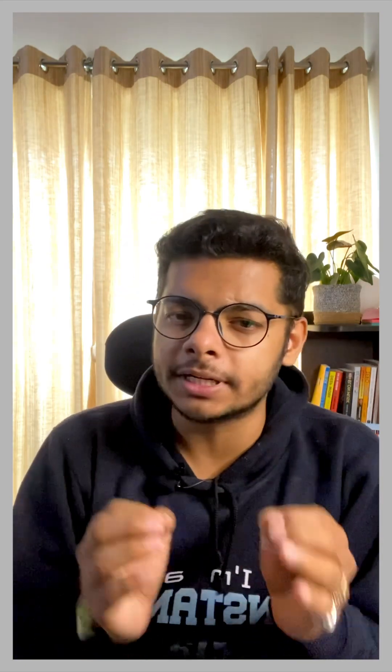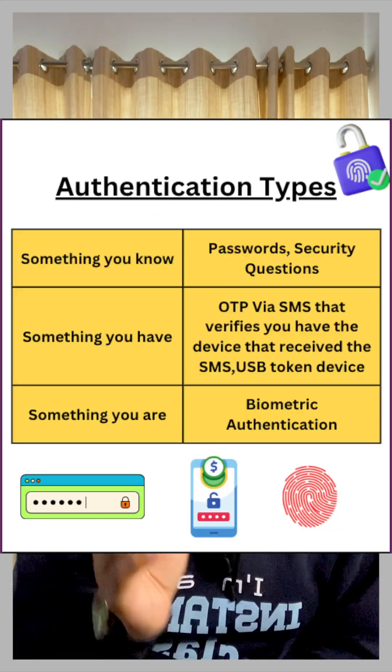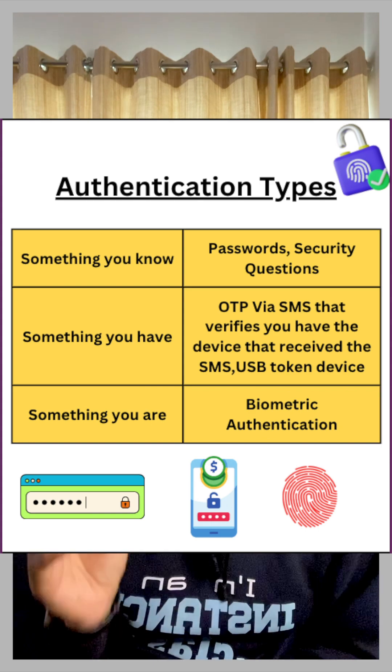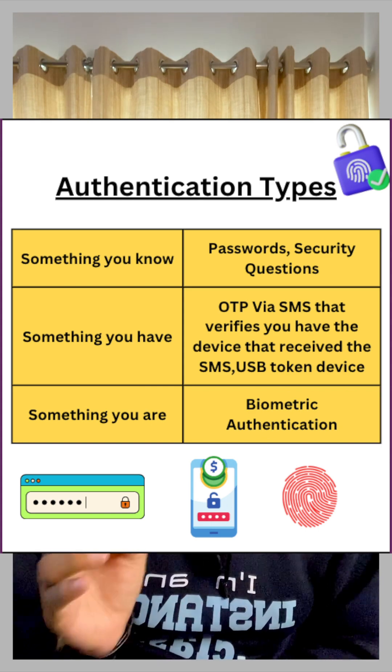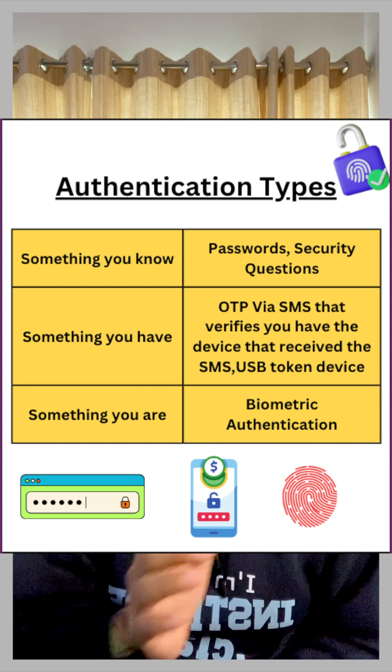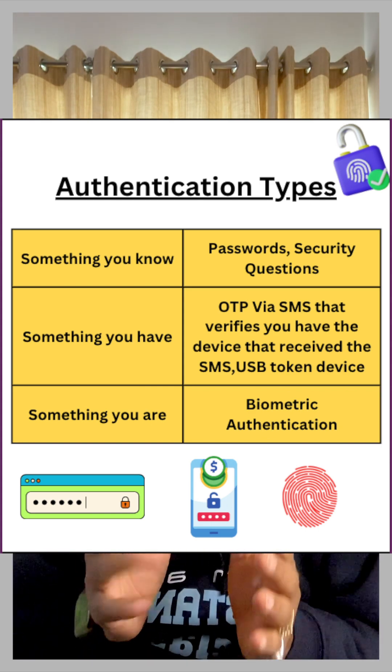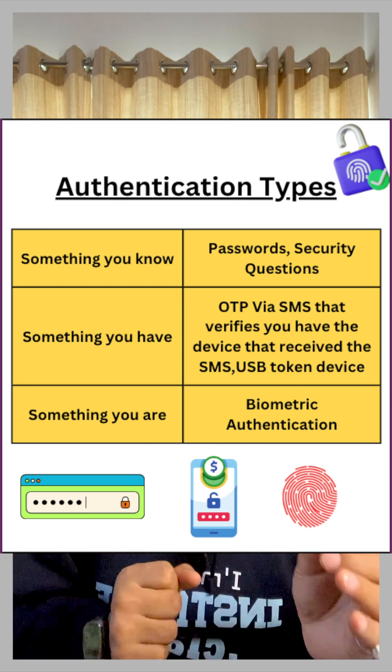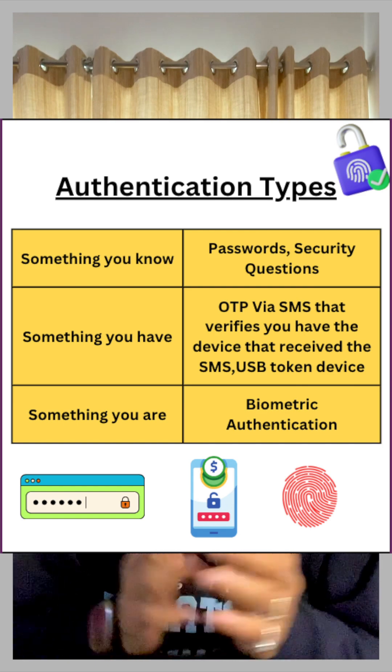On a high level, there are three types for authenticating users: something you know, something you have, and something you are. Every type has its own corresponding ways of authenticating users.